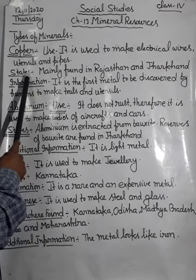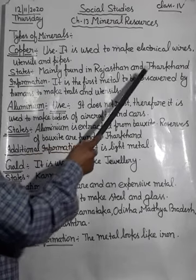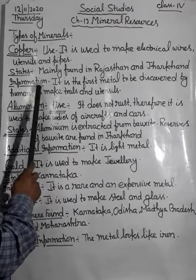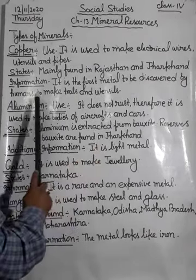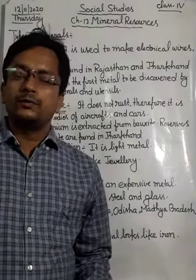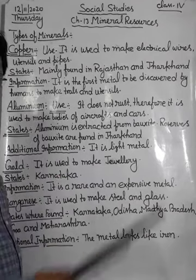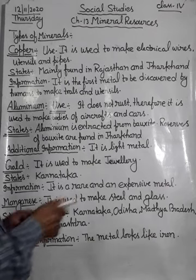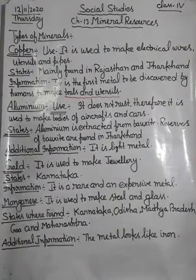The state where this mineral is mainly found is Rajasthan and Jharkhand. For additional information: copper is the first metal to be discovered by humans to make tools and utensils. People first made utensils and tools with the help of copper. This is very important to keep in mind.